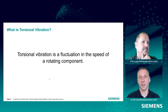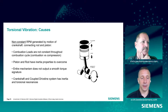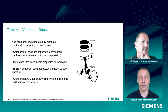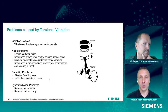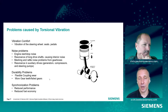Torsional vibration is the fluctuation of the speed of a rotating component. Even though we may tell a shaft to spin at 1,000 RPM, chances are it's not spinning at exactly 1,000 RPM — it has some fluctuation. This non-constant RPM can be caused by the motion of the crankshaft, driving gears, or the connection. Combustion loads, like in the six-cylinder engine, cause a quick burst of speed and a slowing as the piston goes into the exhaust motion. Bottom line: we're not getting smooth torque on that shaft.